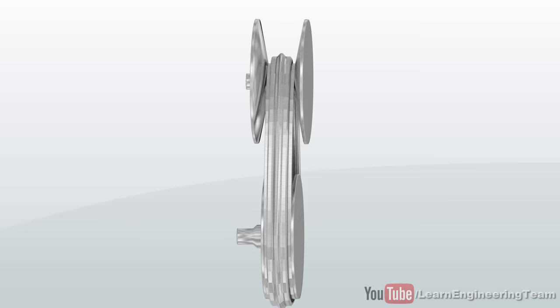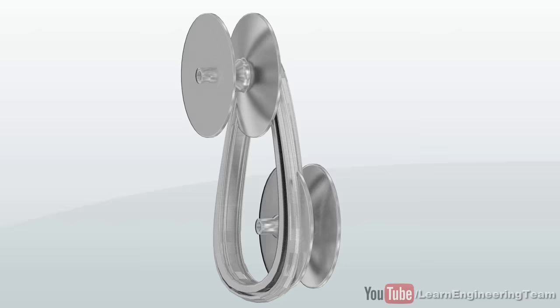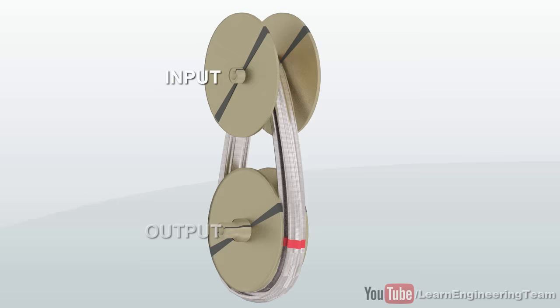The basic parts of a CVT are demonstrated here. Two conical pulleys and a steel belt make up a basic CVT. As you can see, the input pulley turns the belt and the belt turns the output pulley.